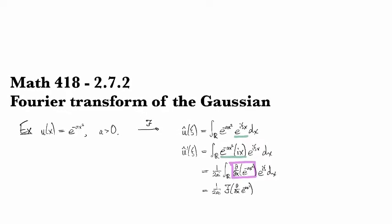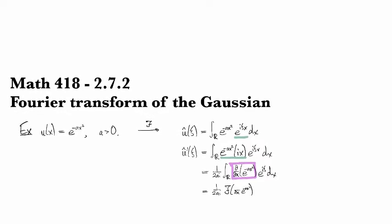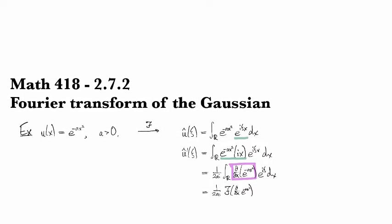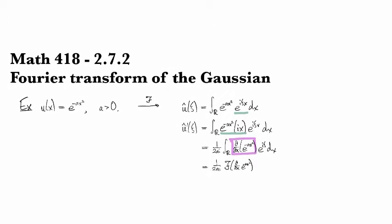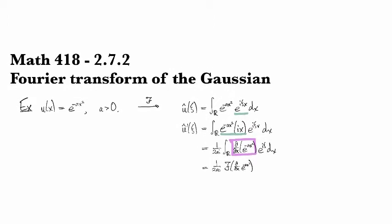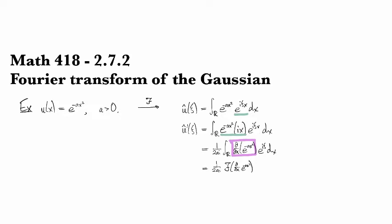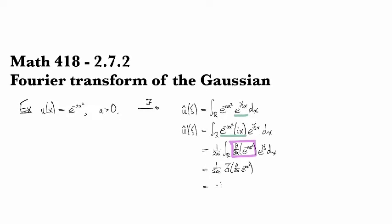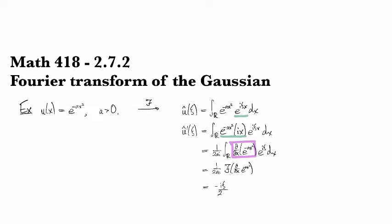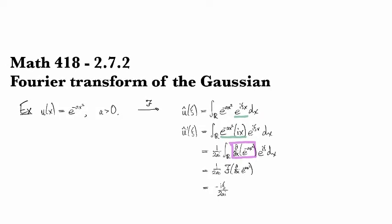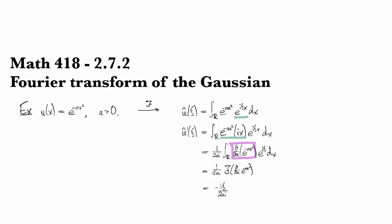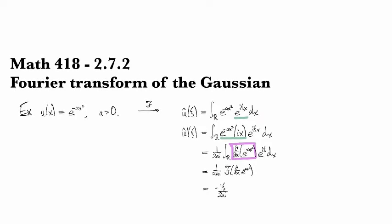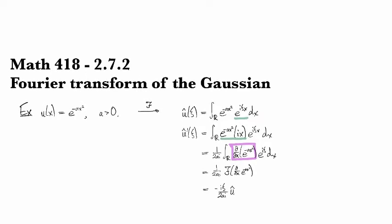And we know how the Fourier transform behaves with respect to derivatives. So we can use that rule to say that's just going to throw out a factor of minus iξi. And then what's left is going to be the Fourier transform of e to the negative ax squared, which is exactly the guy that we're looking for.